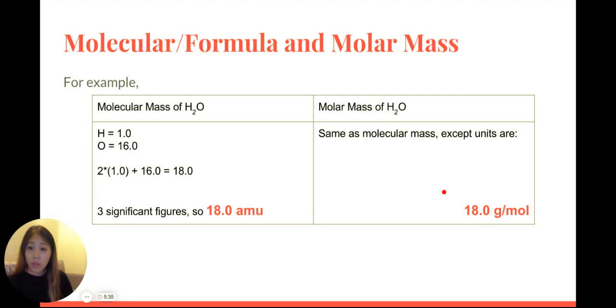Two atoms of hydrogen means you multiply this by two, and you only have one oxygen, so you just plus 16. This gives you 18.0. Don't forget your significant figures, and remember to tag along your units of AMU when you're asked for molecular mass.